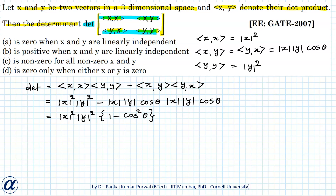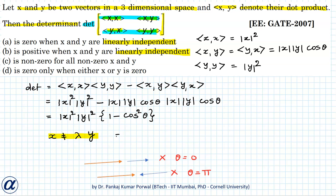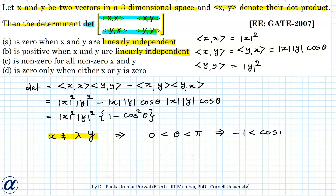When the vectors x and y are linearly independent, I cannot write x or y as a linear combination of the other, so x cannot equal lambda y. In this case, the vectors x and y cannot be parallel or anti-parallel, and the angle between them will be strictly between 0 and pi. That implies cos theta will lie strictly between minus 1 and 1, and therefore cos squared theta will be strictly less than 1.